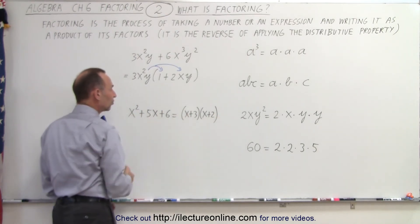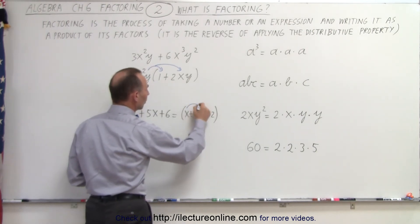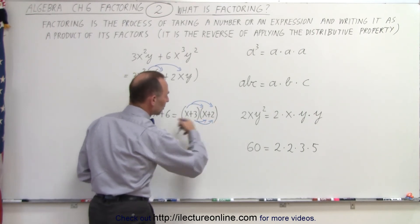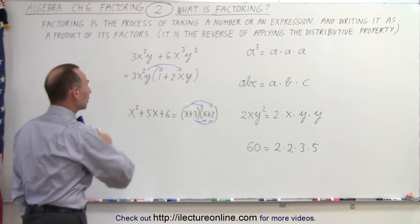And of course, if you go the other direction, what we can do is we can multiply the x times x and the 2. So we distribute the x over the two terms here. Then we distribute the 3 over the two terms there. When we multiply everything out, then add common terms, we should get back what we started with.